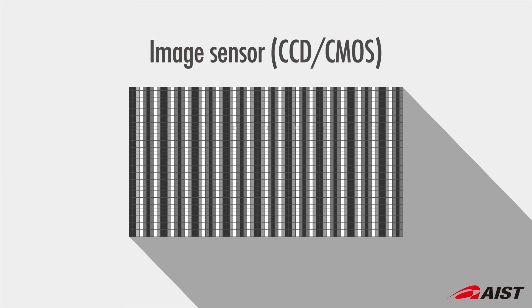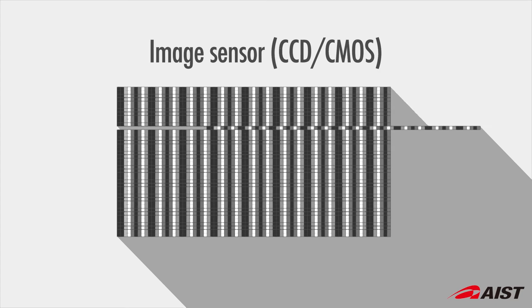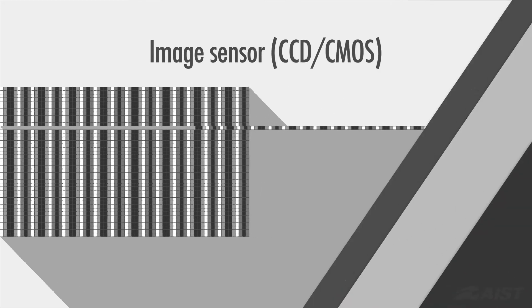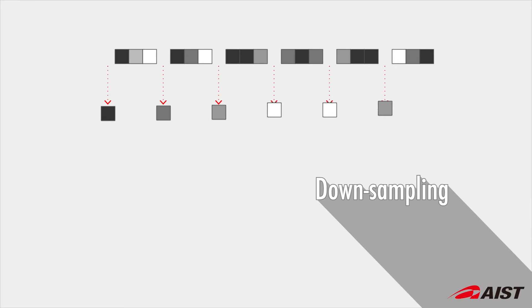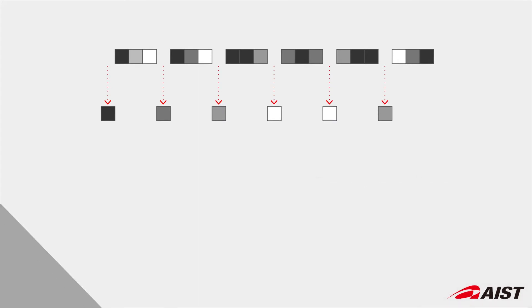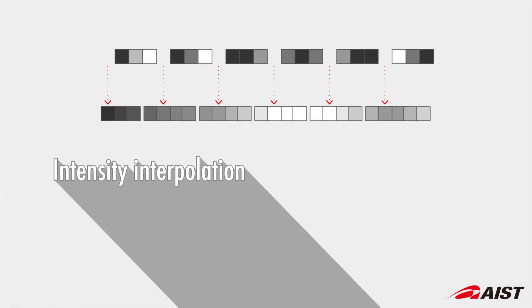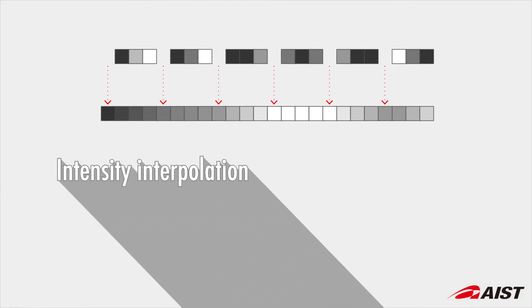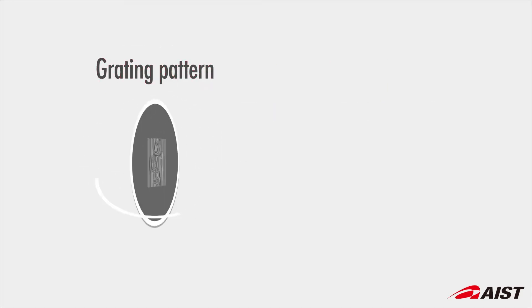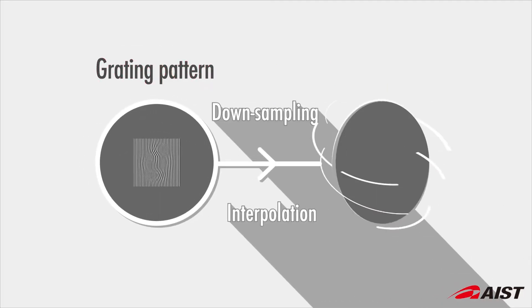For the captured grating image, by downsampling with a t-pixel, which is similar to that of the pitch of an original grating pattern P, we can generate a sparse moiré pattern from a grating image. We do this by first thinning out the pixels, and then interpolating them using neighboring intensity data. Here you can see a single clear moiré pattern image.